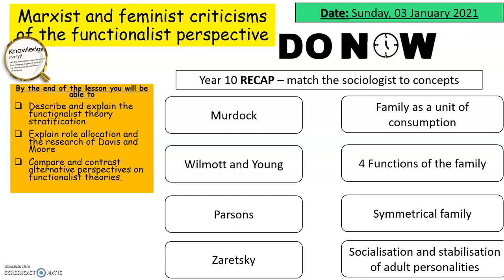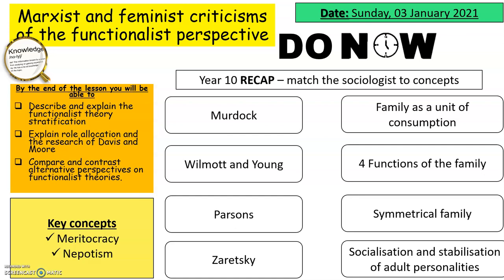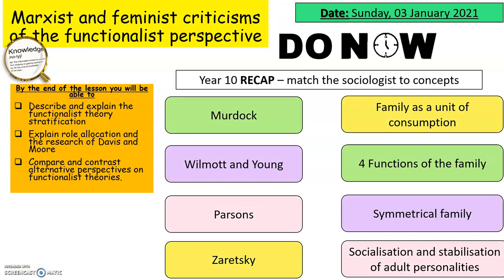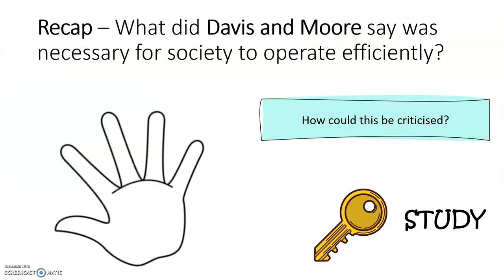As a starter, I've got four key sociologists from our Year 10 content — can you match up who said what? I'll give you a few minutes; feel free to pause and work through at your own pace. Email me if you have any queries. Answers: Murdoch did the four functions of the family; Wilmott and Young talked about symmetrical families; Parsons talked about stabilization of adult personalities and socialization; and Zaretsky talked about the family being a unit of consumption — a Marxist idea.